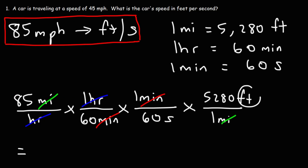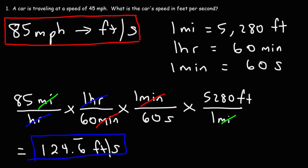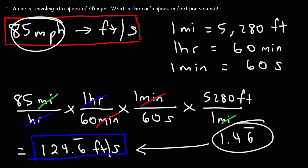We have feet per second left over. So it's going to be 85 times 5,280, divided by 60, and then divide by 60 again, giving us 124.6 repeating feet per second. If you take 5,280 and divide it by 3,600 — which is 60 times 60 — you get 1.46 repeating. So if you simply multiply the value in miles per hour by 1.46 repeating, you'll get your answer in feet per second for a faster way of getting the answer.